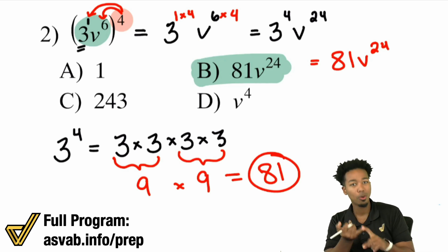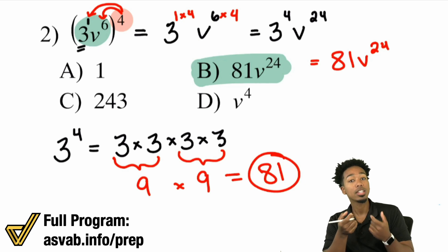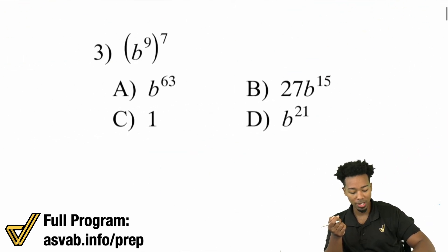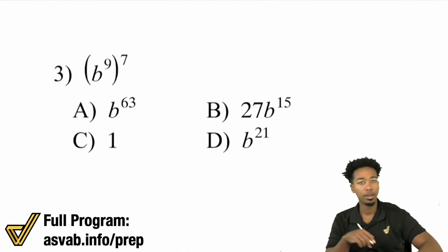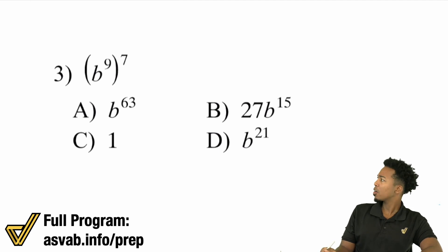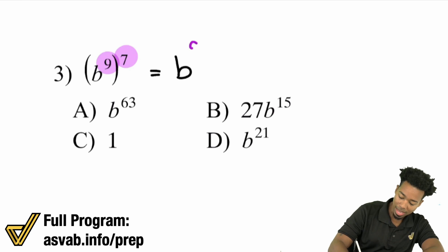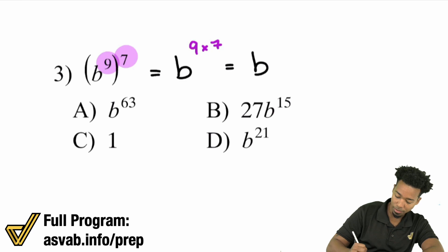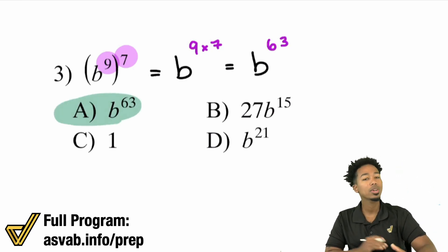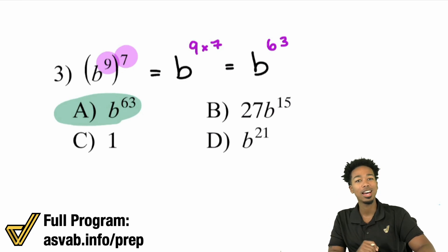To recap: a power to a power, we multiply those powers. And remember that each individual piece in a term has its own exponent. Back to basics — B to the power of 9, all to the power of 7. Multiply those exponents: B to the power of 9 times 7, which is B to the power of 63. And that is answer A.